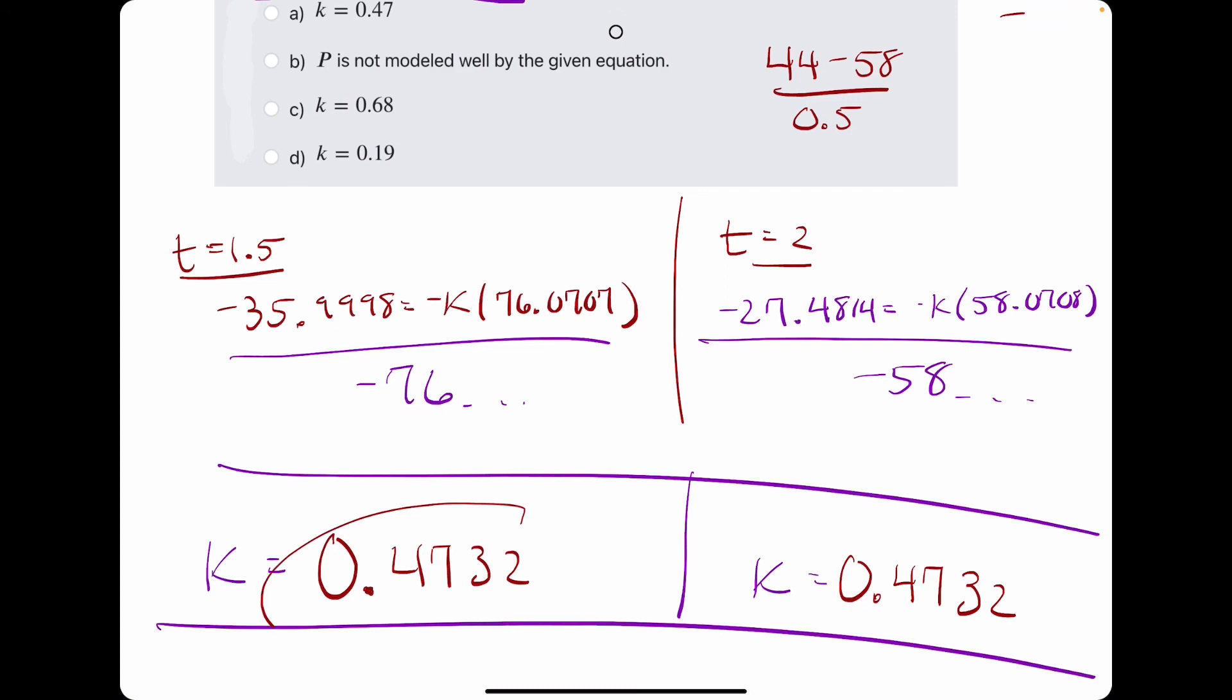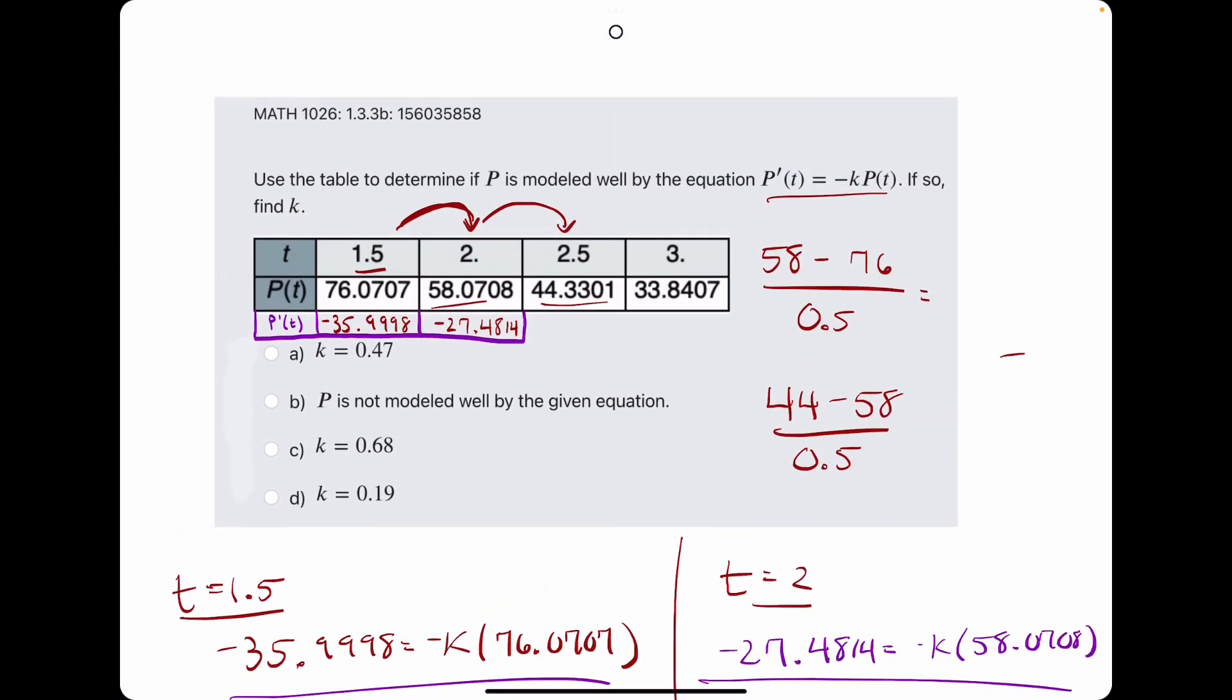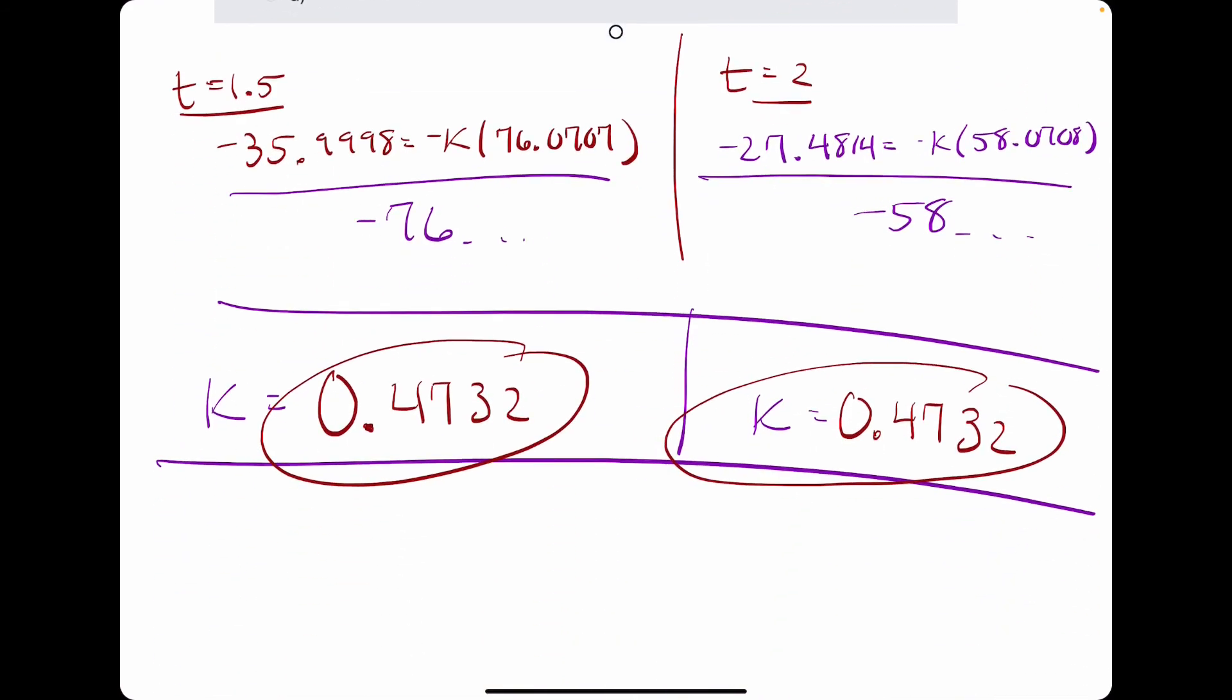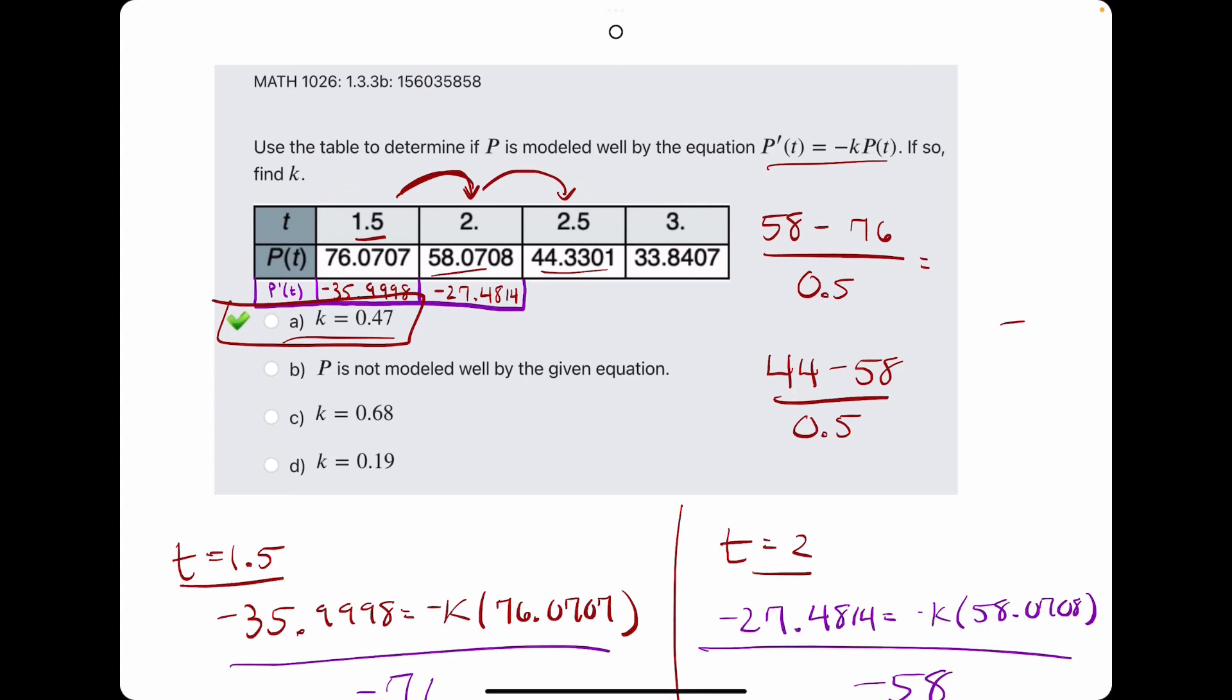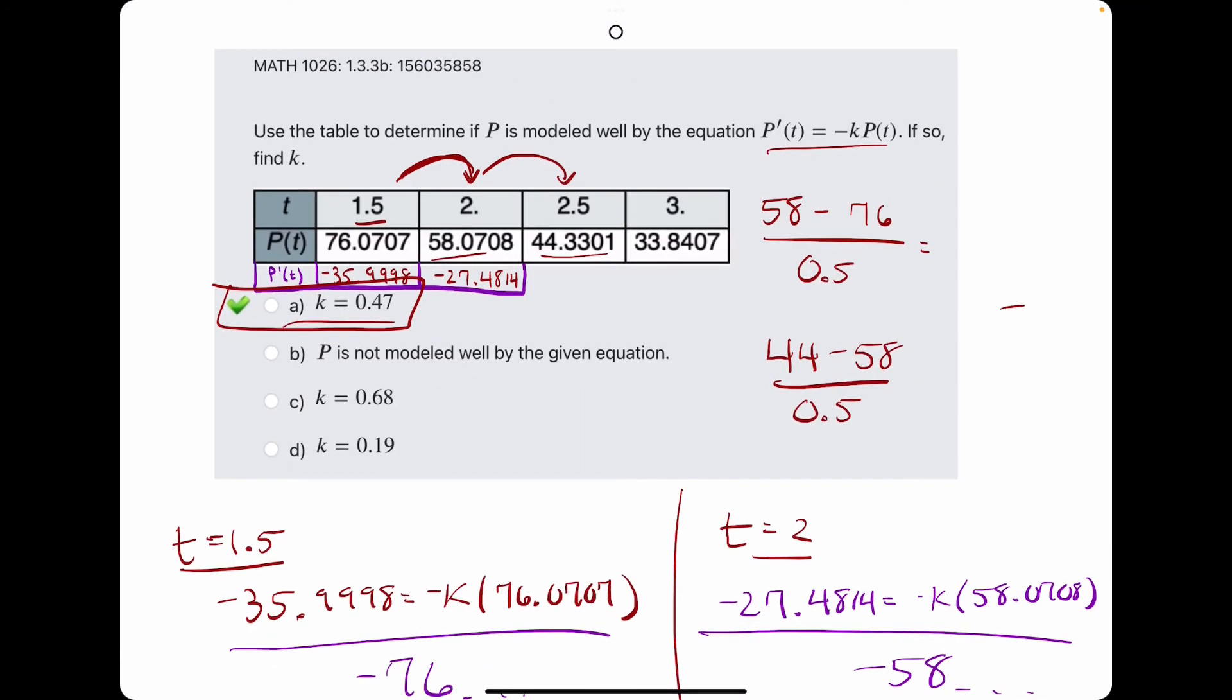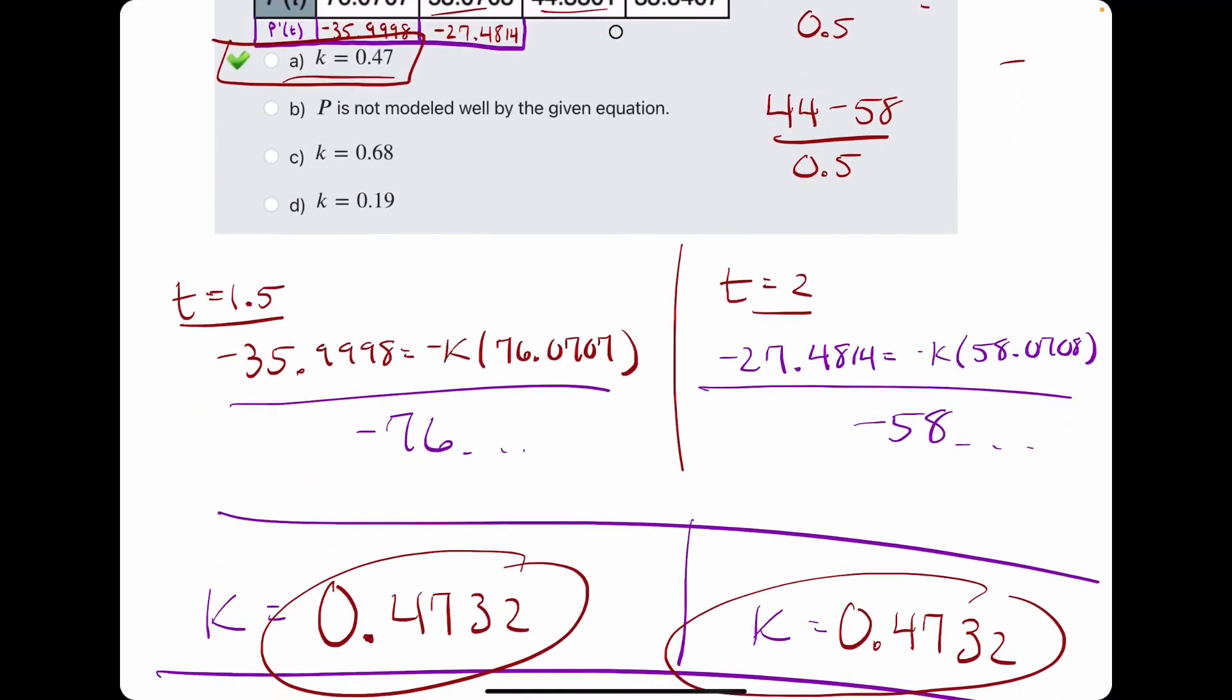So these k values match, which means our k value is 0.47, and a is our answer. So this is kind of the route we have to take if the t values have a difference other than 1.